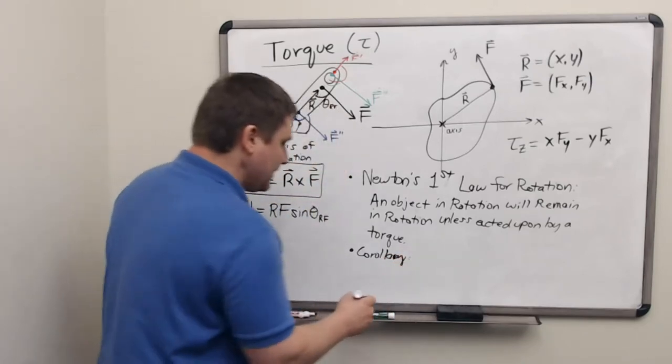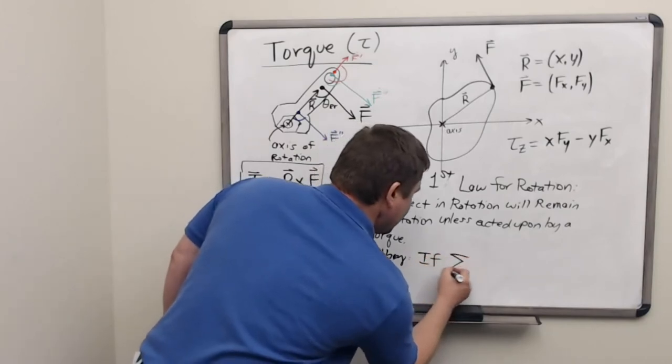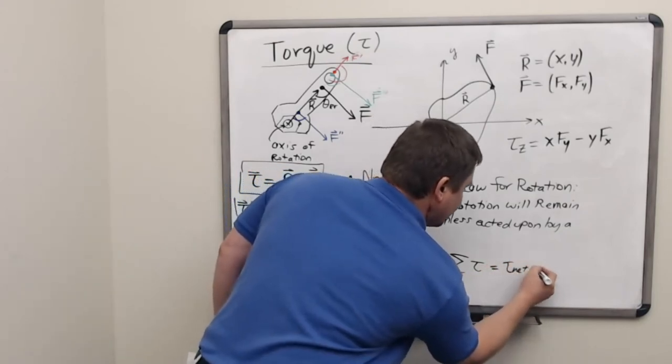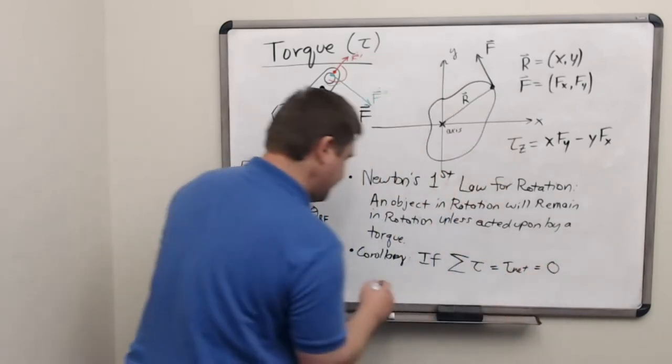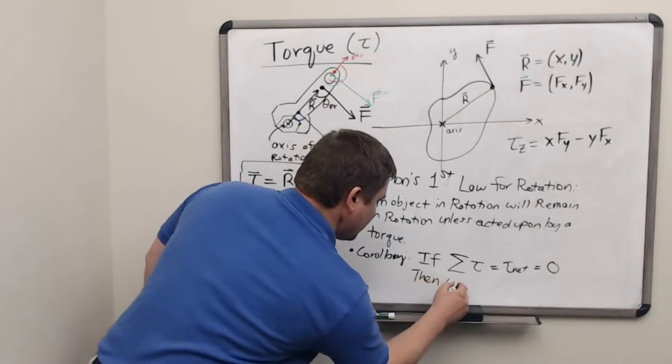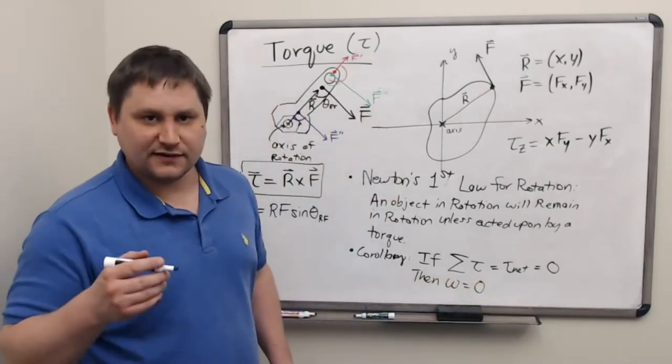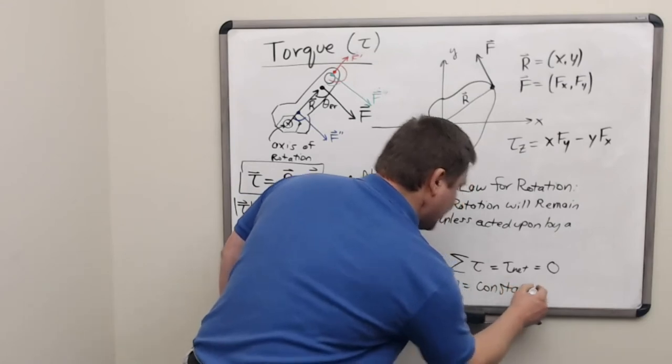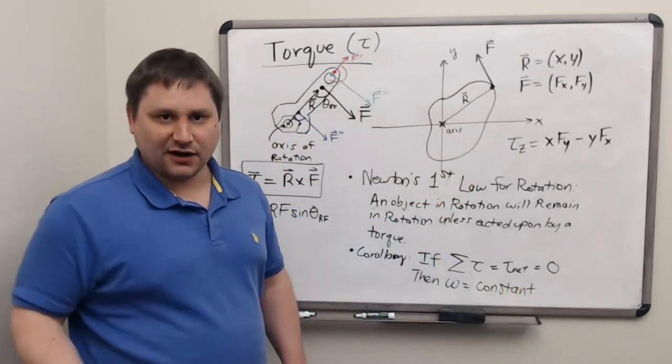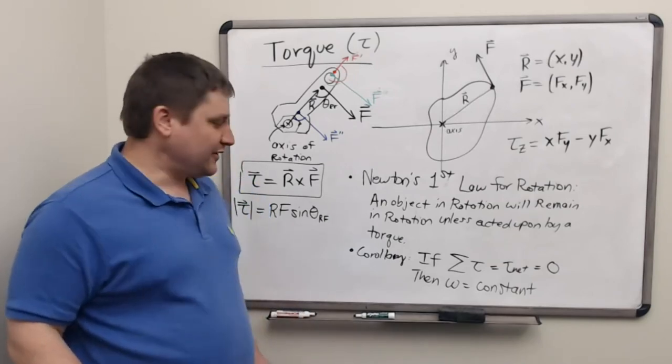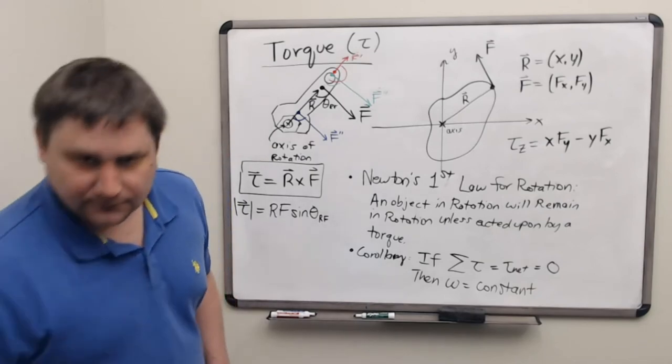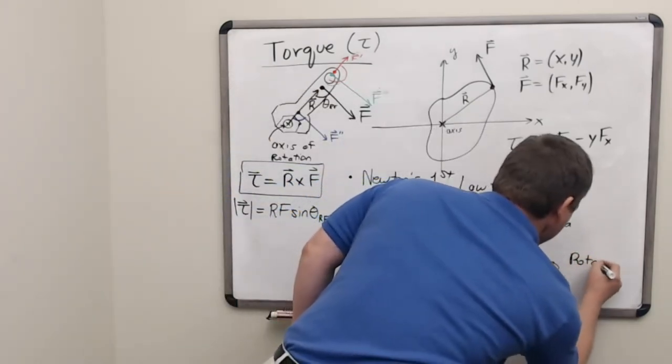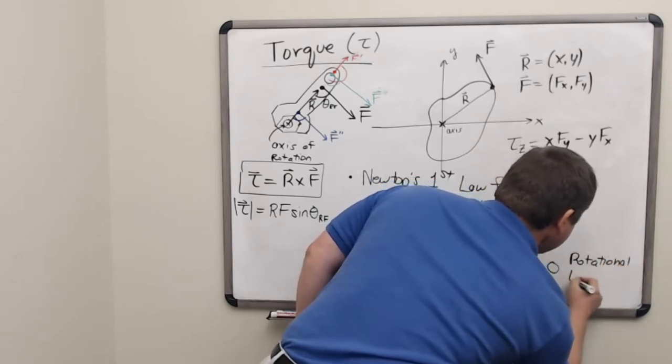An immediate corollary to this is that if the sum of all torques, which we'll call the net torque on an object, is zero, then the angular velocity of that object remains, not zero, remains constant. So if it was zero, then it stays zero, and if it was non-zero, then it stays at its constant value. We call this situation where the net torque is zero, for good reason, we call this rotational equilibrium.